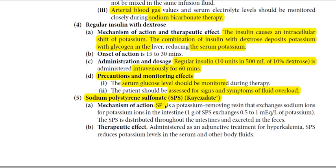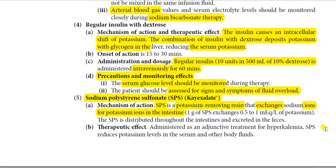Next is sodium polystyrene sulfonate (SPS). SPS is a potassium-removing resin that exchanges sodium ions for potassium ions in the intestine. It acts in the intestine, removes potassium from the blood into the intestine, and transfers sodium from the intestine into the bloodstream, thereby managing both hyperkalemia and hyponatremia. Usually, 1 gram of sodium polystyrene sulfonate exchanges 0.521 milliequivalents per liter of potassium.